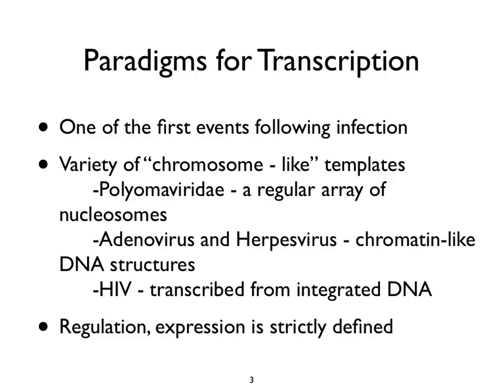Adenoviruses and herpesviruses—large and larger DNA viruses—have chromatin-like features without nucleosomes; they have some protein decoration of their genomes forming a chromatin-like structure in the nucleus. HIV, the human immunodeficiency virus, is transcribed from integrated DNA, so it's seen as though it's part of the host. What we've learned is that regulation of virus genetic information is strictly defined. Virus genes are transcribed in an orderly fashion—some before others, some very dependent on what's made before them, and some dependent on DNA synthesis. There are signposts and triggers in the replication cycle that allow transcription to be regulated.